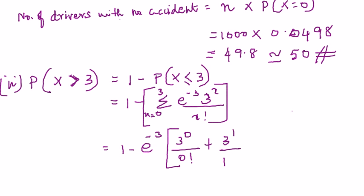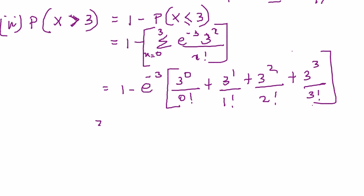3 power 1 by 1 factorial, 3 power 2 by 2 factorial plus 3 power 3 by 3 factorial. So this is going to be nothing but e power minus 3.